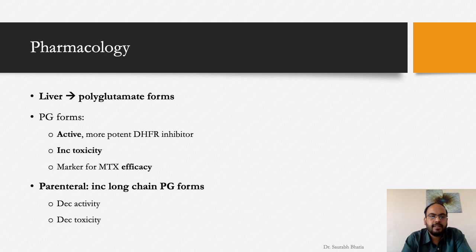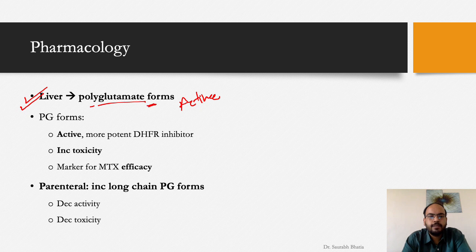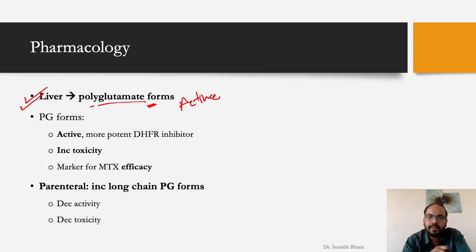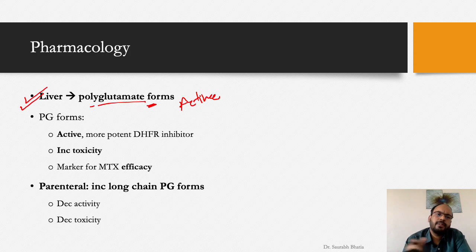Methotrexate is a prodrug that must be converted to polyglutamate forms, which are the active drugs. This conversion happens in the liver, in hepatocytes. These polyglutamate forms are active and are more potent DHFR inhibitors.